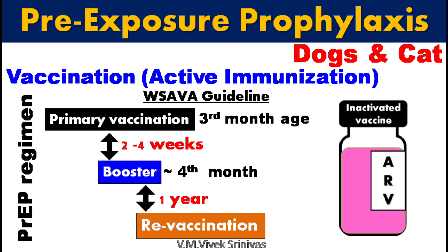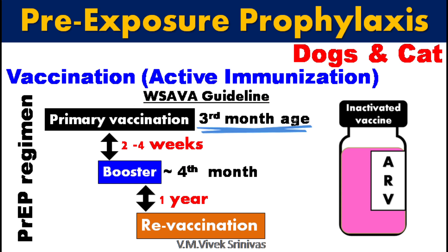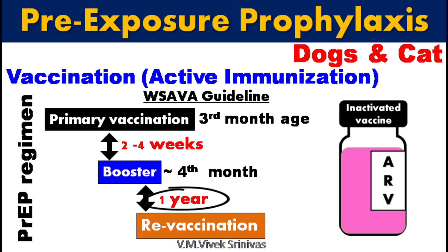For pre-exposure prophylaxis in animals like dog and cat, anti-rabies vaccination is done as per WSAVA guideline — that is the World Small Animal Veterinary Association global guideline. As per its vaccination schedule, primary vaccination in dogs and cats against rabies is done at 3rd month of age, that is 12th week, with a dose of 1 ml per animal intramuscular. Followed by 2 to 4 weeks apart, the next vaccination is done at 4th month, that is 15th week. Re-vaccination is done every year, that is annually, to maintain protective immunity.